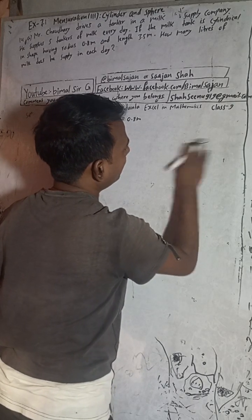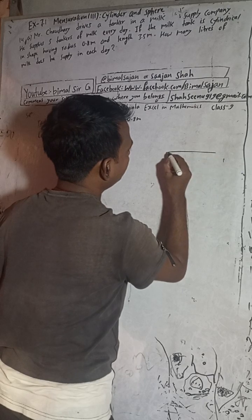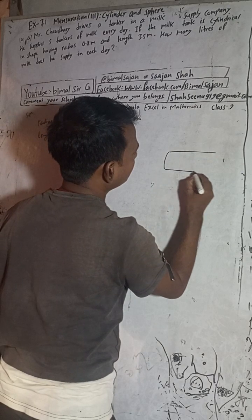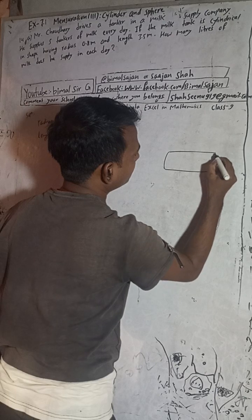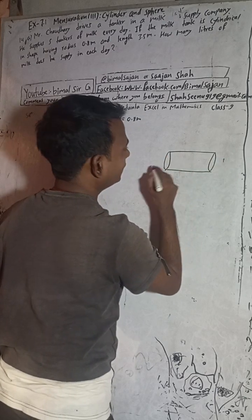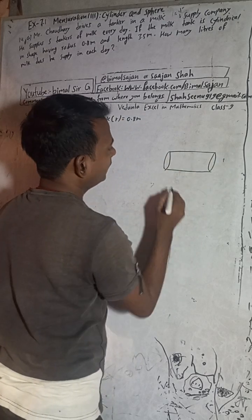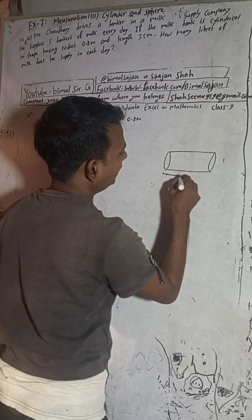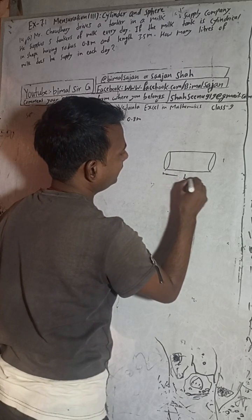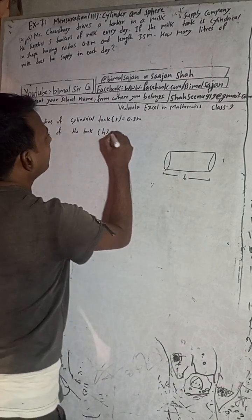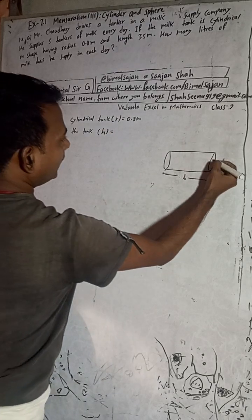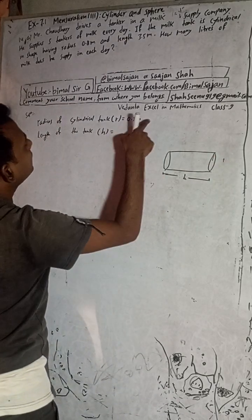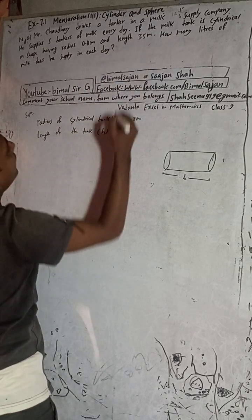Okay, this is a cylindrical tank. This is the height, and this is the radius. So radius is given as 0.8 and height is 3.5 meters.